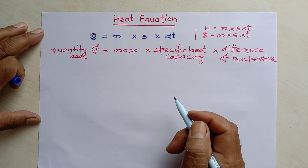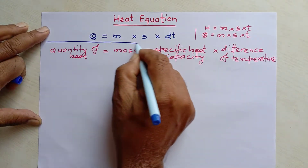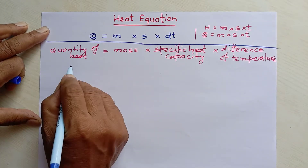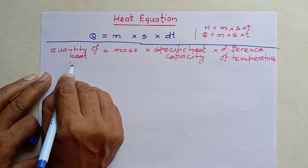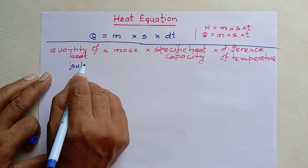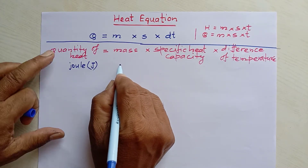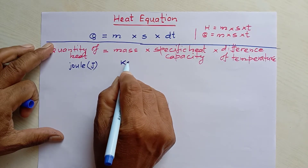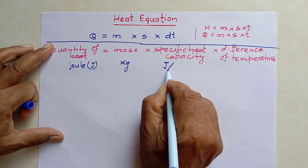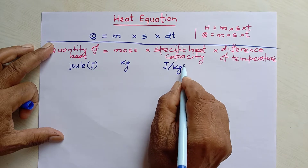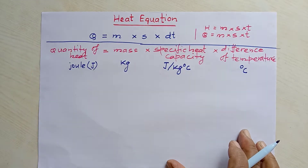Now I want to mention the unit of each symbol. Quantity of heat is measured in Joules, so its unit is Joule. Mass is represented by kilogram. Specific heat capacity has units of Joule per kg degree Celsius, and difference of temperature is measured in degree Celsius.